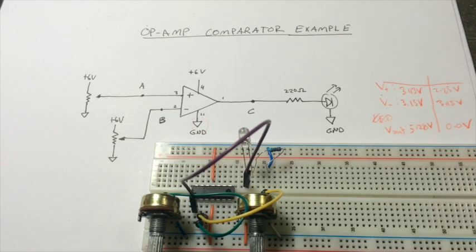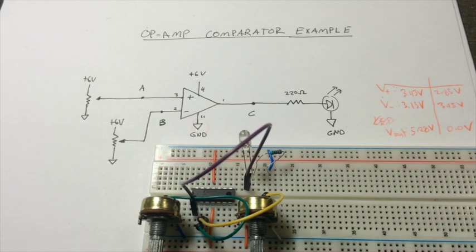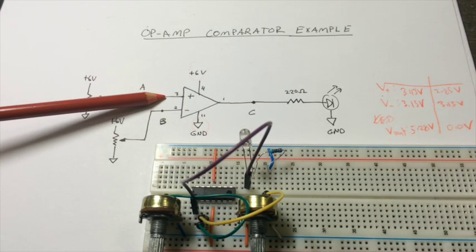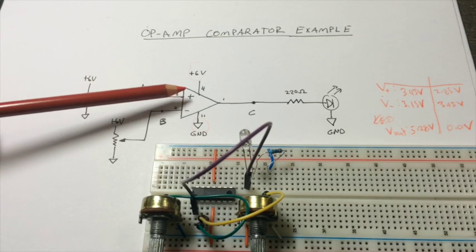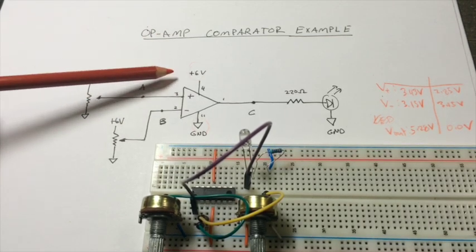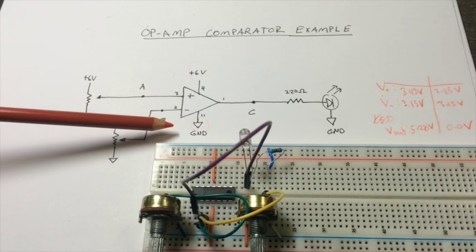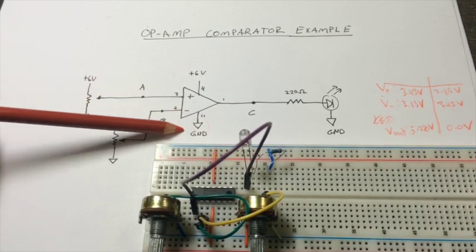So if it sees that the voltages are different - if the non-inverting pin is higher - it will rail towards the high voltage of the power supply. And if not, it will rail towards the low voltage of the power supply. In this case, that's ground.